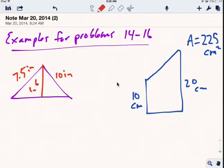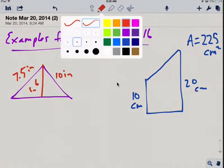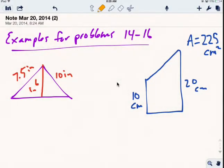These are examples to help solve problems 14 through 16. To start, we need some information. For problem 14, we need to know the formula for the area of a triangle: area equals one-half base times height.